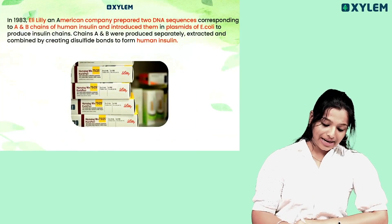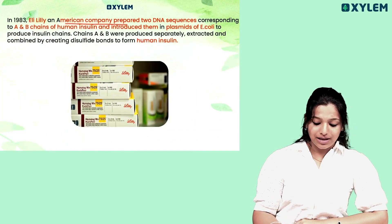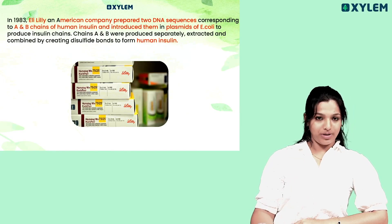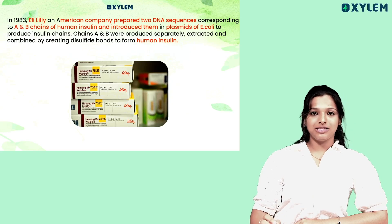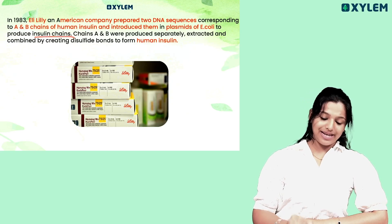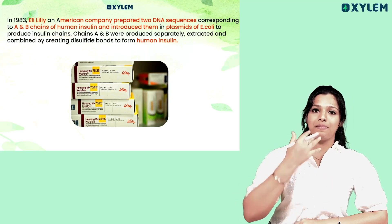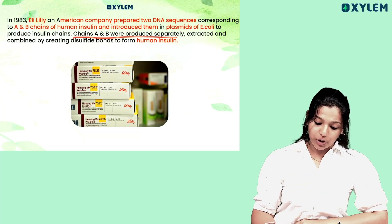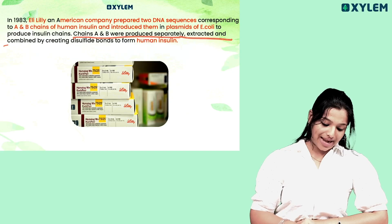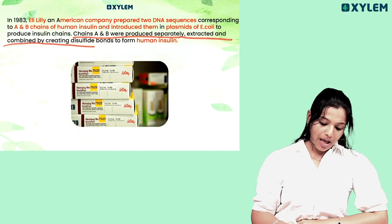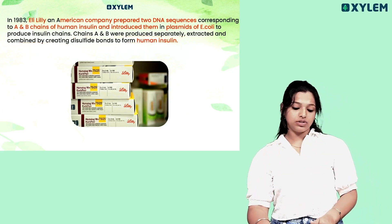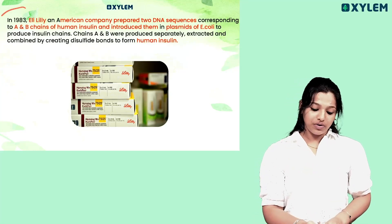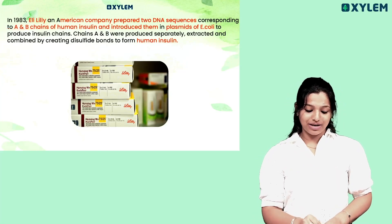In 1983, Eli Lilly, an American company, prepared two DNA sequences corresponding to chain A and chain B of human insulin and introduced them into the plasmid of E. coli to produce insulin. Chains A and B were produced separately, extracted, and combined by creating disulfide bonds to form human insulin.